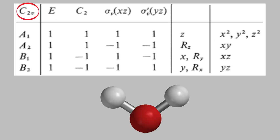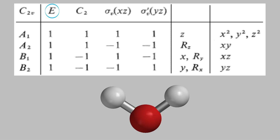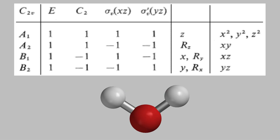In the upper left corner is the name of the point group, in this case C2V. Along the top row is a list of the different symmetry elements that a molecule belonging to this point group must contain. In this case, the molecule must have the identity element E. Every molecule contains the identity element, because this tells us to do nothing with our molecule in order to return it to its original appearance. The next symmetry element is a C2 rotation axis, which water certainly contains. Finally, the next two symmetry elements are vertical mirror planes. Water has two such planes, and the character table tells us that one is in the XZ plane and the other is in the YZ plane.